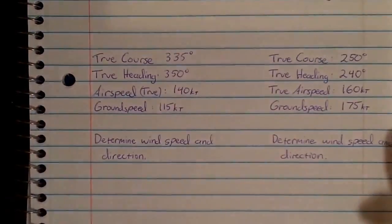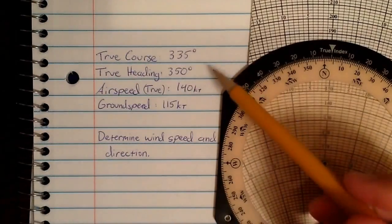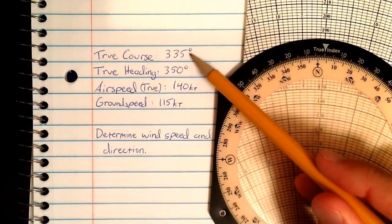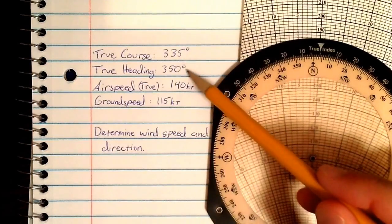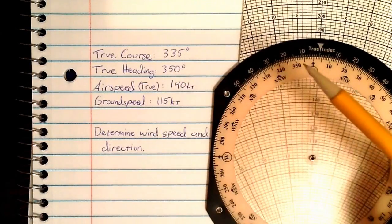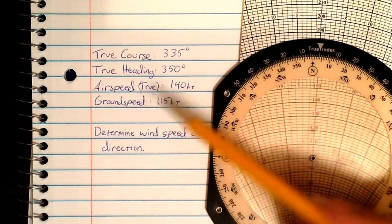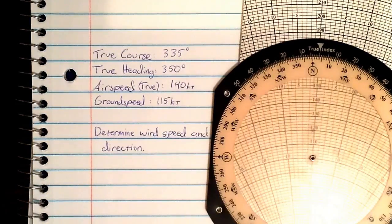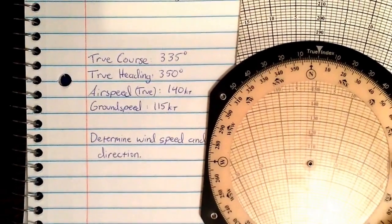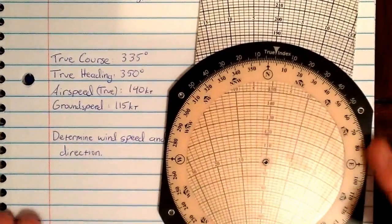Let's do another problem. Consider now that you're flying a true course as drawn on a sectional of 335 degrees. You're actually holding a heading of 350 degrees, 140 knots of airspeed, and 115 knots of ground speed. So let's configure our card in airplane mode using that given information.